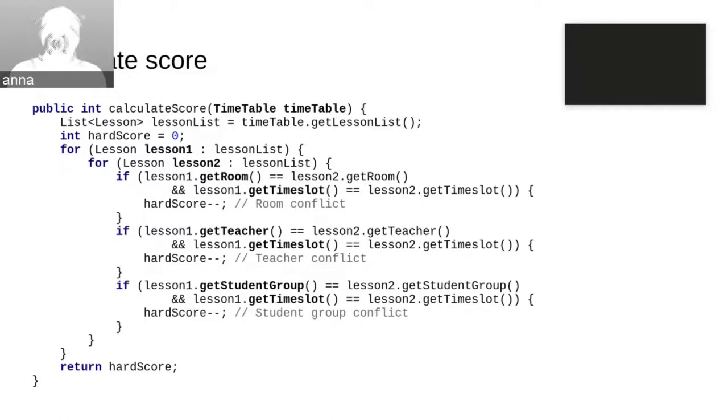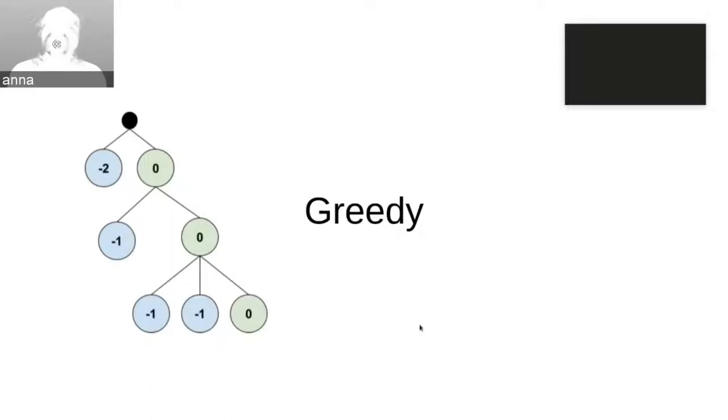We have talked about architecture, we talked about domain model, but how are we going to evaluate our solution? Like when we receive and create some timetable, how do we know if it's better, if it's good or not? So we need to write some function for that, that will calculate a score for us. So the score calculation function would look like this. It will get as an input the state of the timetable. And then for each and every lesson, it will compare to each and every pair of lessons. And it will check if they have the same rooms or the same teacher or the same student group. So by each of such conflicts, we will reduce hard score by one. And then we just will return it.